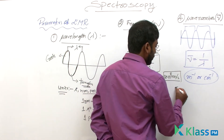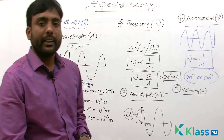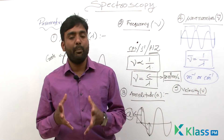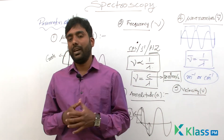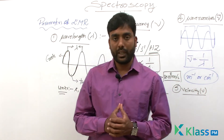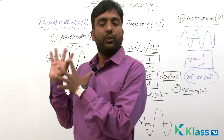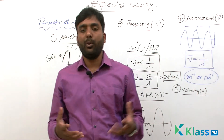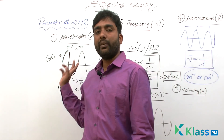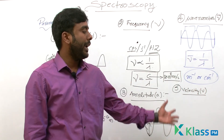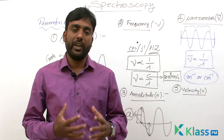The fifth parameter is velocity — the distance traveled by an electromagnetic wave in one second is called its velocity. Units are meters per second or centimeters per second. So the five parameters that describe electromagnetic radiation are: wavelength, frequency, wave number, amplitude, and velocity.